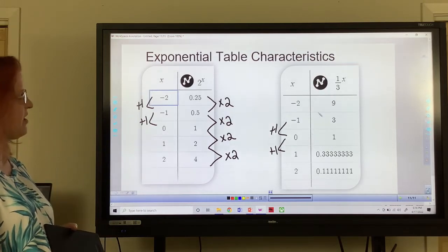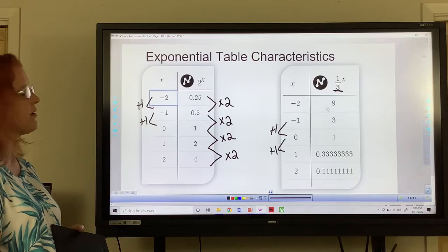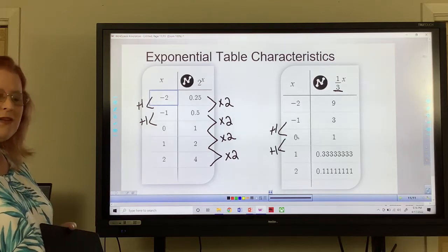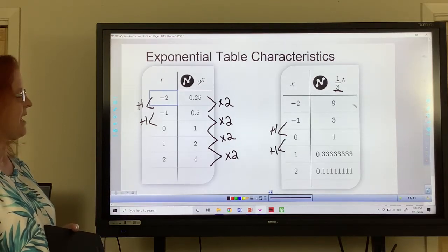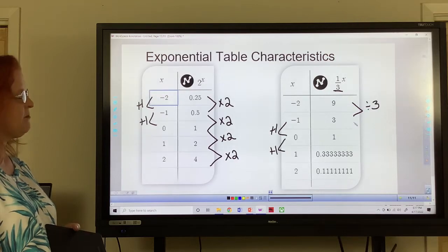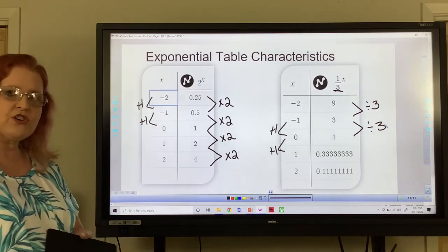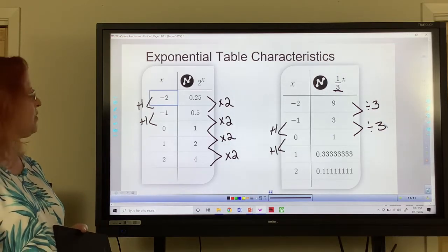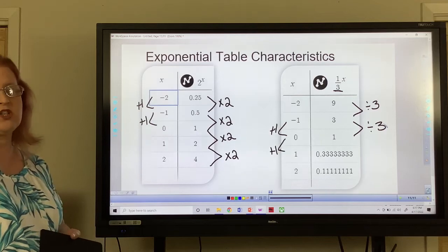Same thing over here. I give it away with the 1 third. But multiplying by 1 third is the same as dividing by 3. So division and multiplication are inverses. So that works too. As long as it's multiplication or division, that's going to be your exponential functions.